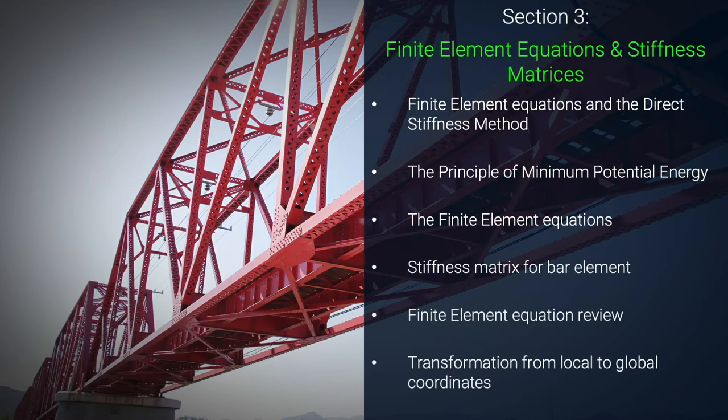In section three we'll expand our focus from material behaviour to modelling structural stiffness, and in particular we'll develop a stiffness matrix for an axially loaded bar element. The end goal of this section is to have a stiffness matrix that we can combine with other element stiffness matrices to model a complete structure. Along the way we'll also develop our understanding of the finite element equations.